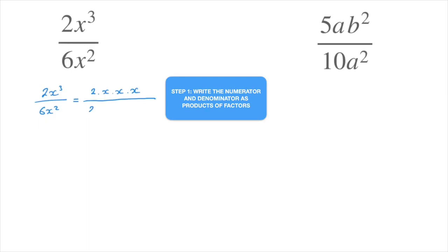Indeed, we have 6, which is 2 times 3. And that's multiplying x squared, which is x times x. And all we have to do to simplify this fraction is cross out anything that the numerator and denominator have in common. It doesn't take us long to see that they both have a 2,